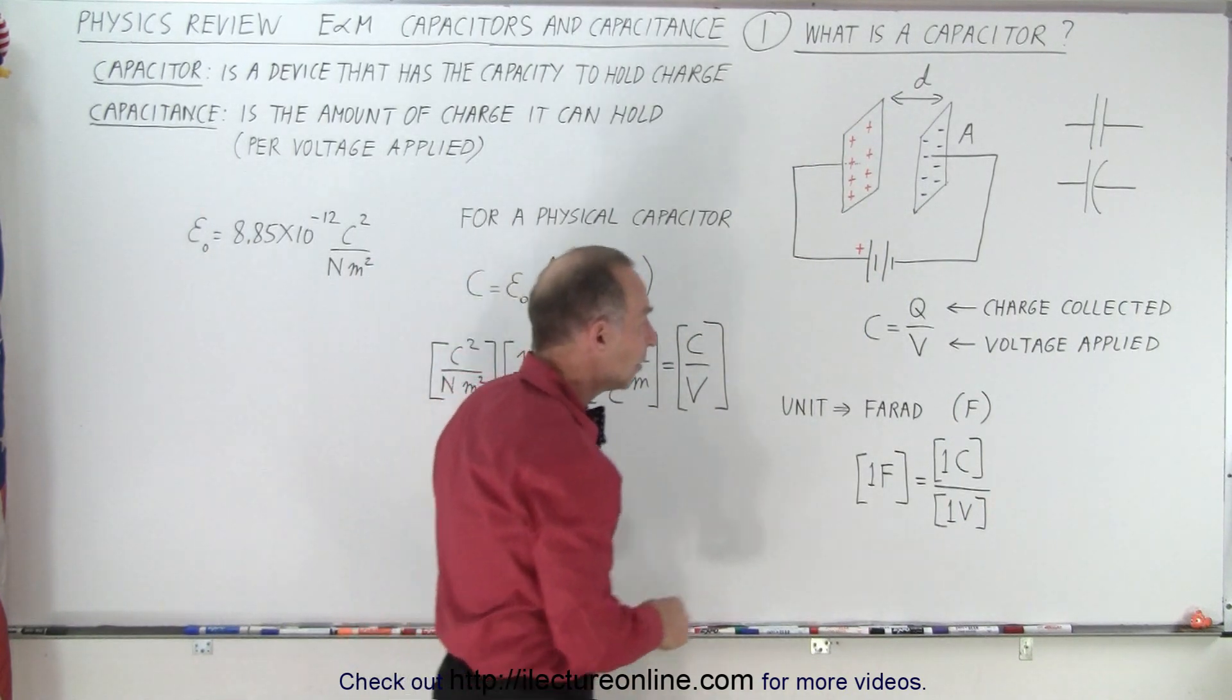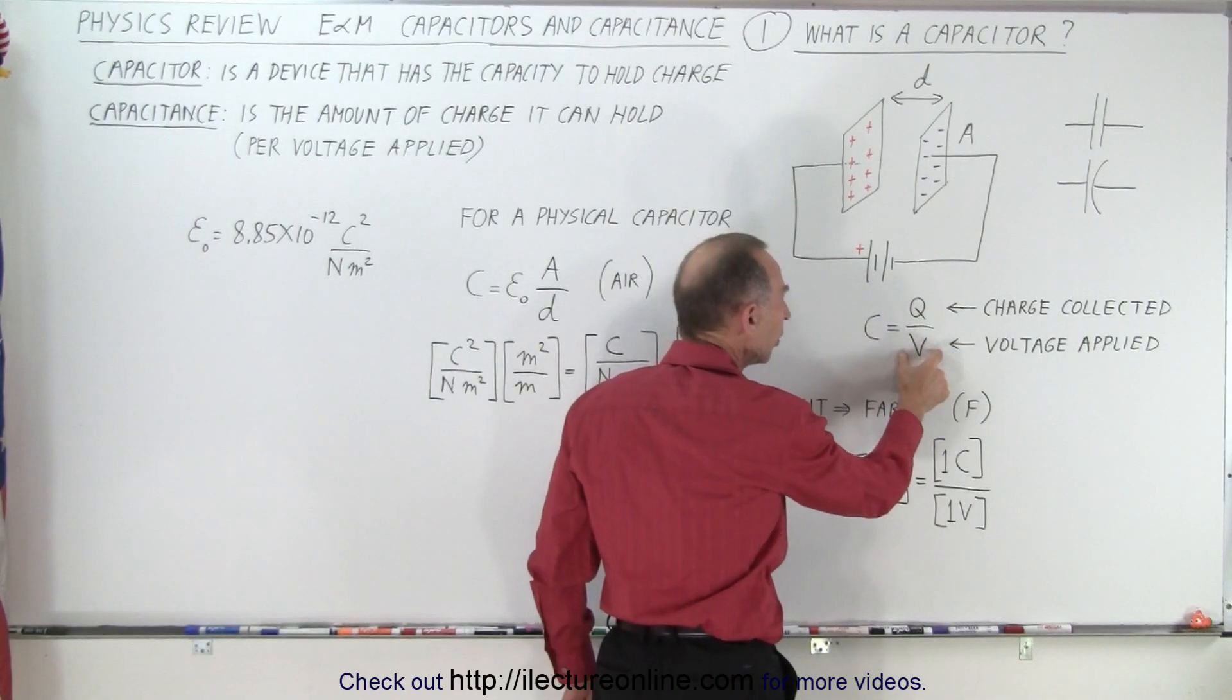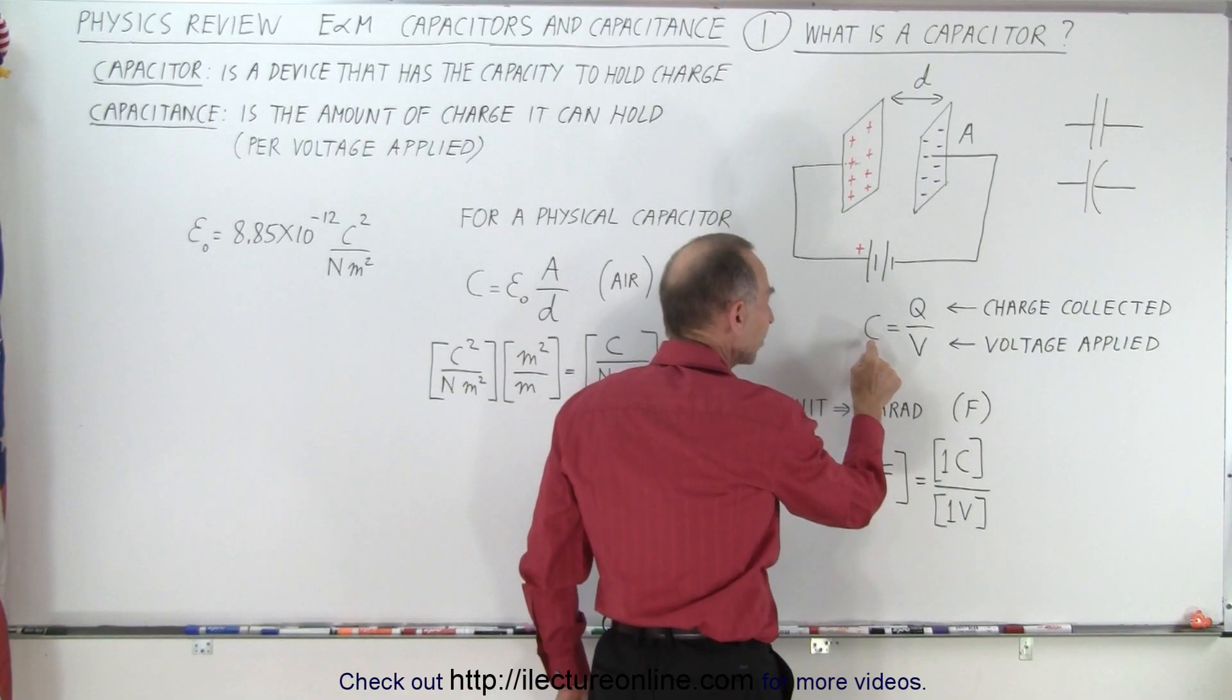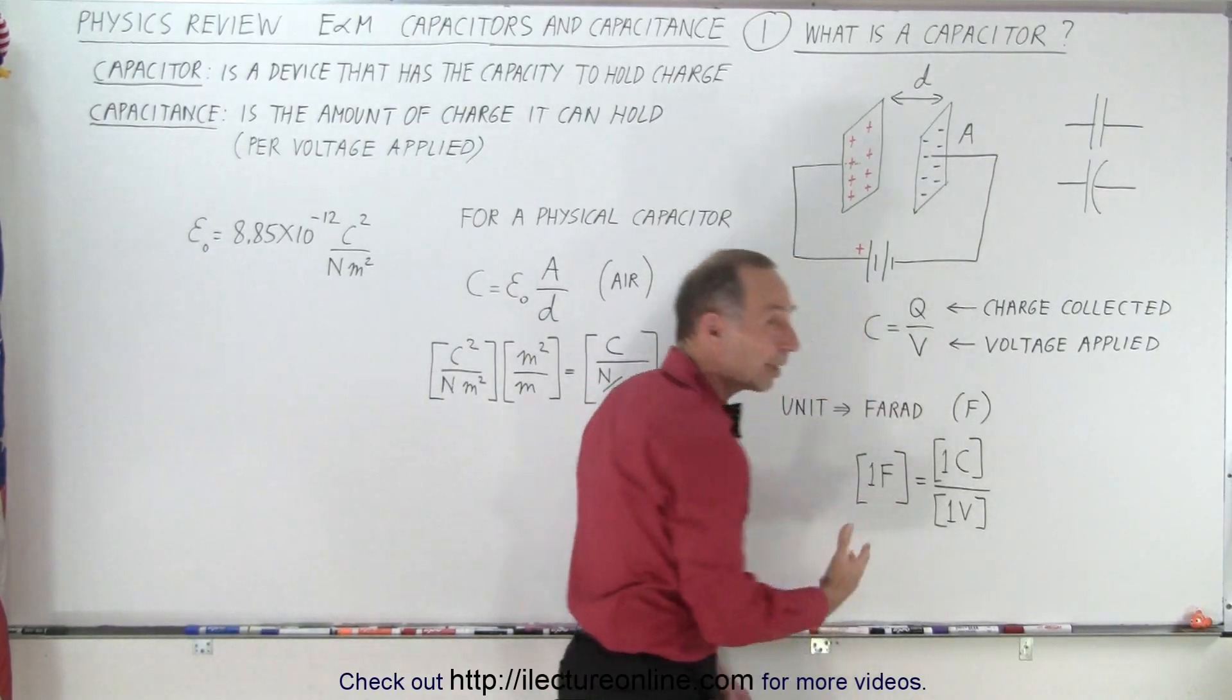Now notice that if you can put one coulomb of charge in a capacitor when you apply one volt, the capacitor has the capacitance of one Farad. That's what that means.